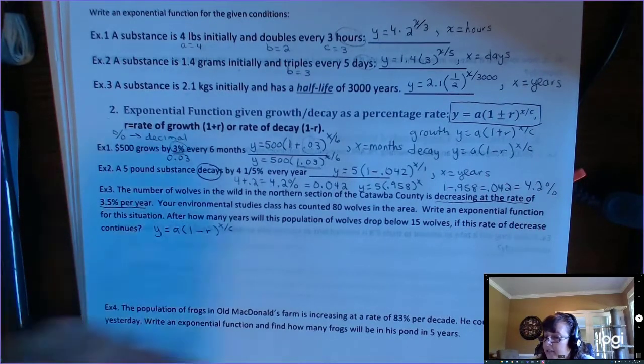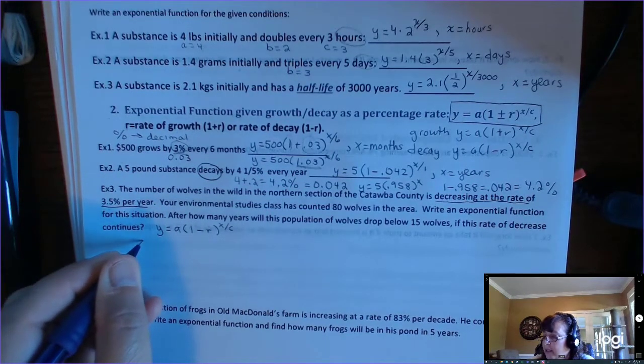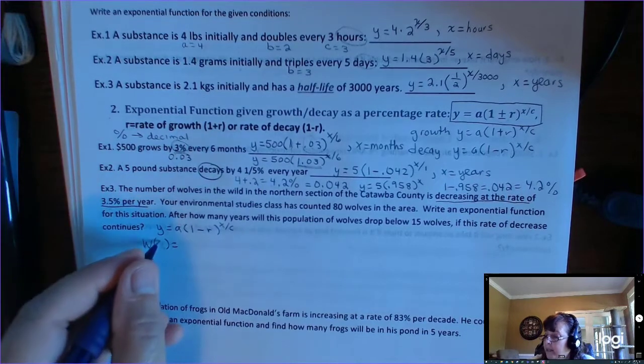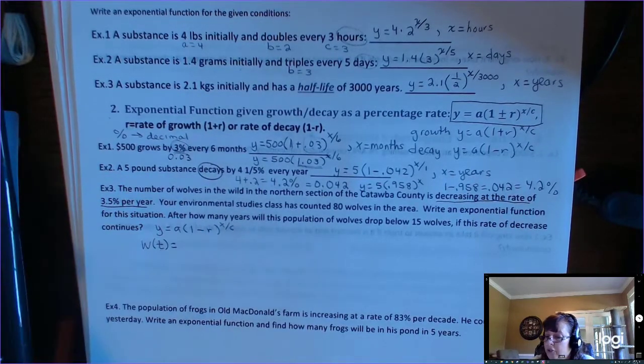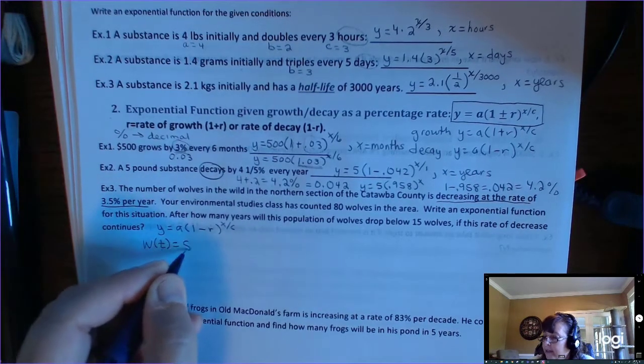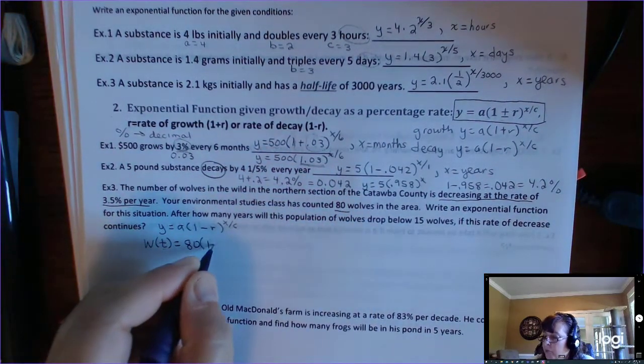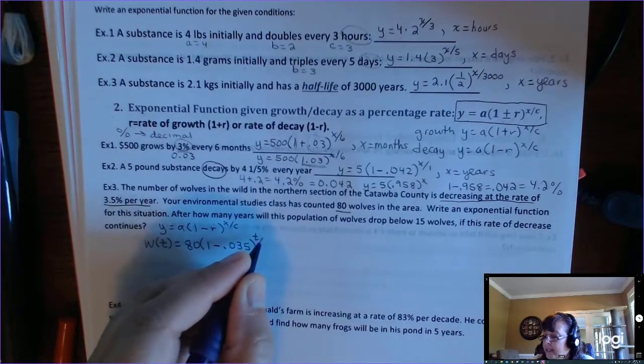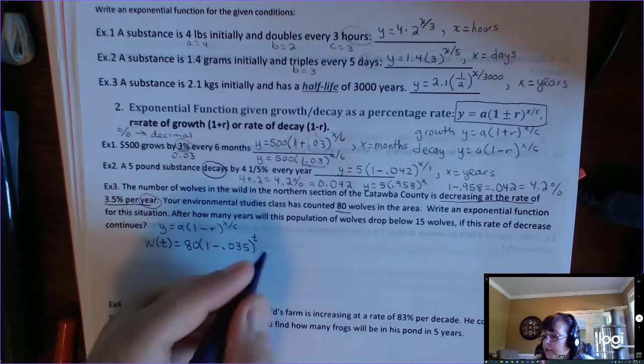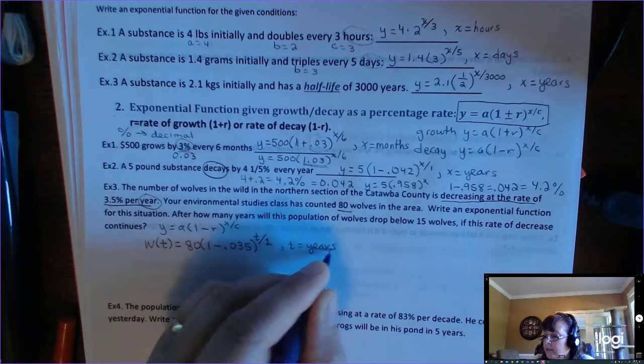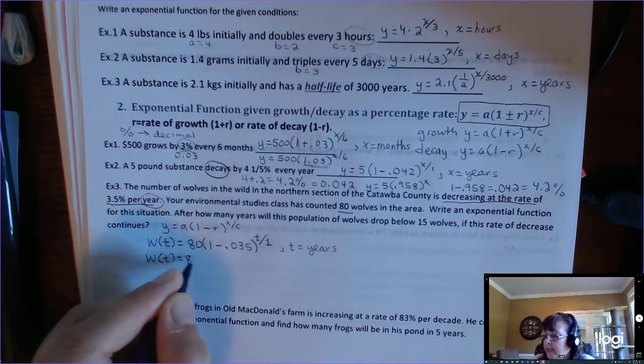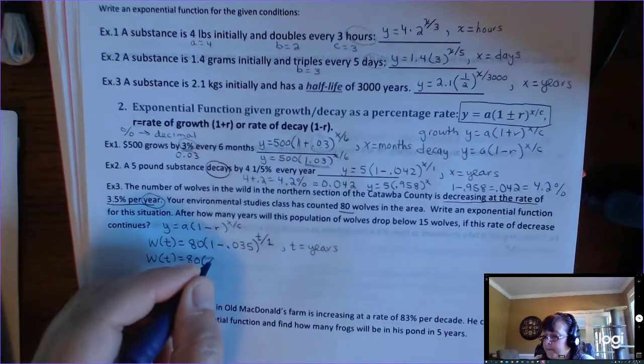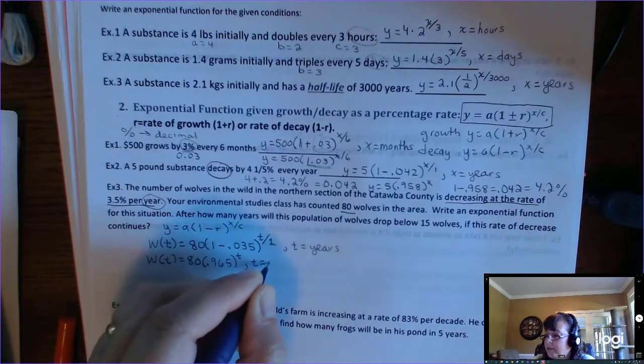So y equals a times 1 minus r to the x over c is the formula we would use because we're given a percent and it's decay. So if you want to use function notation, I'm going to change my y to something like w of x. That's my output when I know, or I can change it to t. Let's just do that for time. So when I know the time, I'll know the number of wolves. A is the initial number of wolves, and that was 80. Right there, 80 wolves. Times 1 minus, they're decaying at 3.5%. So we have to change that to a decimal. That's 0.035. To the t, and they're decaying that fact per year. So over 1, where t is in years. So we can simplify that. W of t is equal to 80 times 1 minus 0.035, 0.965, to the t, where t is in years. So we have written our function. We used function notation. Don't be afraid to change the variables around.